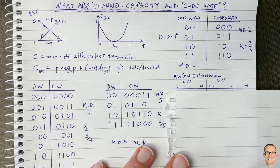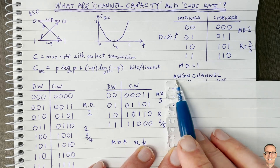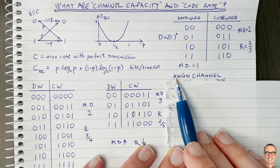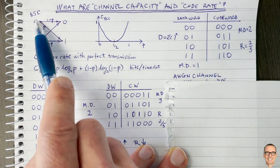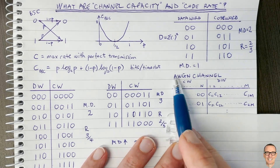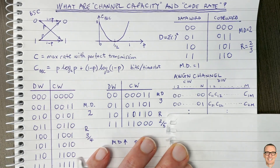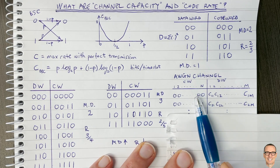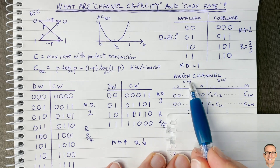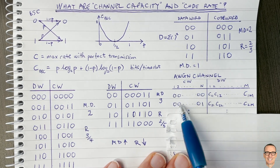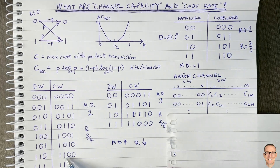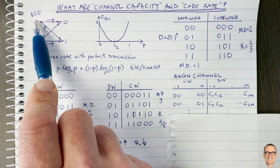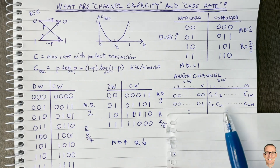Now let's look at a more general situation: the additive white Gaussian noise (AWGN) channel. For this channel, we're not limiting ourselves to zeros and ones at the input. Instead, we can allow any distribution for our input data. In the AWGN channel, the output is not just a zero or one — it is the input plus Gaussian noise. So let's look at a code book that works for the AWGN channel.